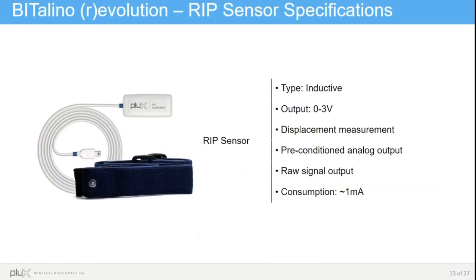Here we show some more technical information about the sensor, which is inductive, has an output limited between 0 and 3 volts, where the baseline is around 1.5 volts. It measures the displacement and not the position, as mentioned before, and allows the acquisition of raw signals, with a low consumption of around 1 milliampere.